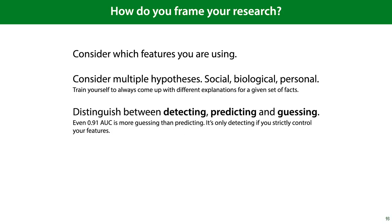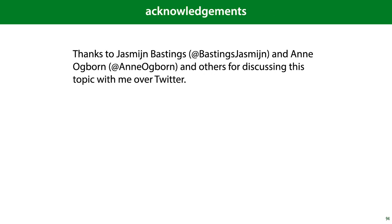So what should we remember when we frame our own research? It's important to consider which features you're using and what they tell you about the thing you're predicting. It's important to always consider multiple hypotheses for any effect you've observed — and these can be social, biological, or personal in nature. I would recommend that you train yourself always to come up with different explanations for a given set of facts; this is a key skill for any scientist, and one that requires creativity and practice. And finally, it's important to distinguish between detecting, predicting, and guessing. I would say that even 91% AUC is more guessing than predicting, and that it's only detecting if you strictly control which features you're using. In the next video, we'll return to the matter of quantitative evaluation of your models, and we'll ask the question of what kind of statistical testing you should do, if any.